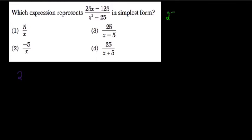Switch pens there. 25 times x minus what? Well, 25 times 5 is 125, over x squared minus 25. Let's just x minus 5 times x plus 5.